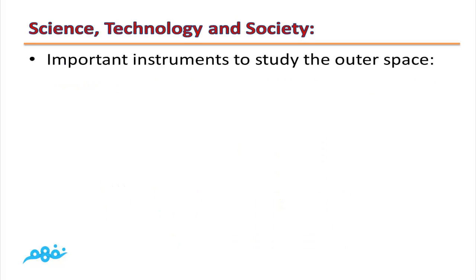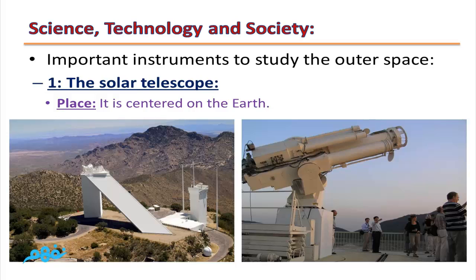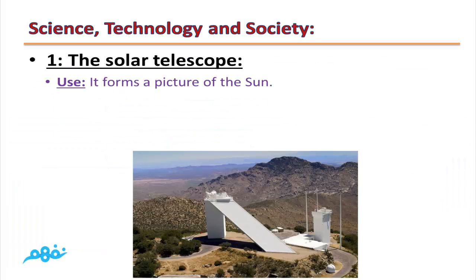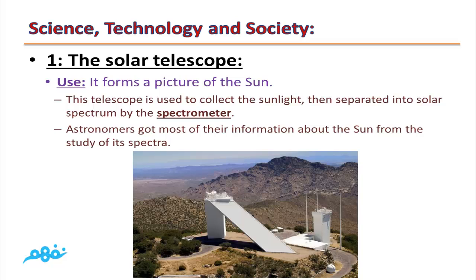Important instruments to study the outer space. Number one: Solar Telescope. It is centered on the Earth. It forms a picture of the Sun. This telescope is used to collect the sunlight, then separate it into solar spectrum by the spectrometer. Astronomers got most of their information about the Sun from the study of its spectra.